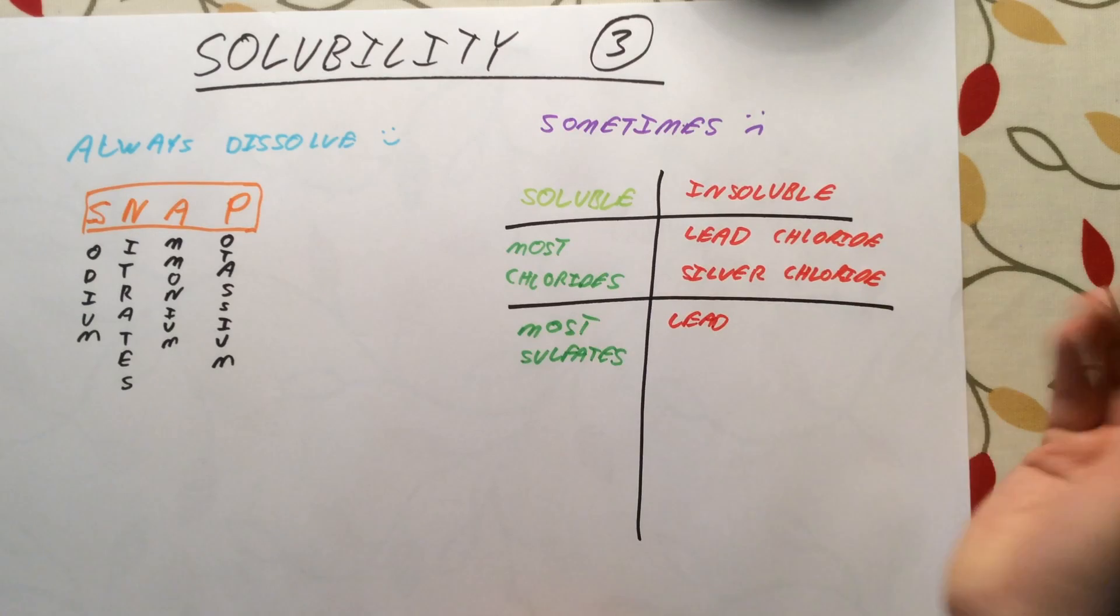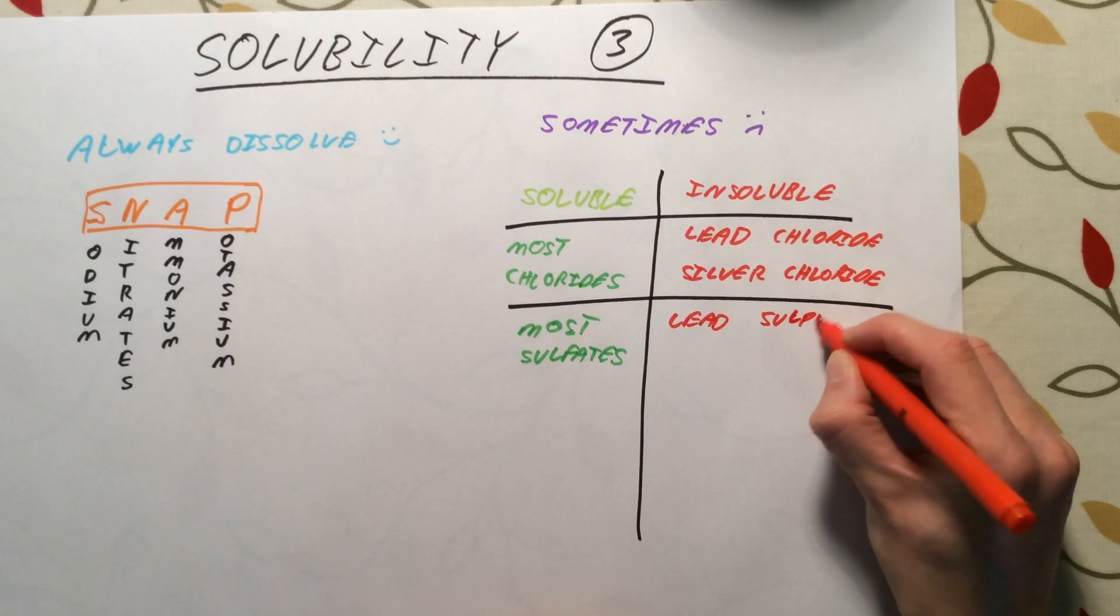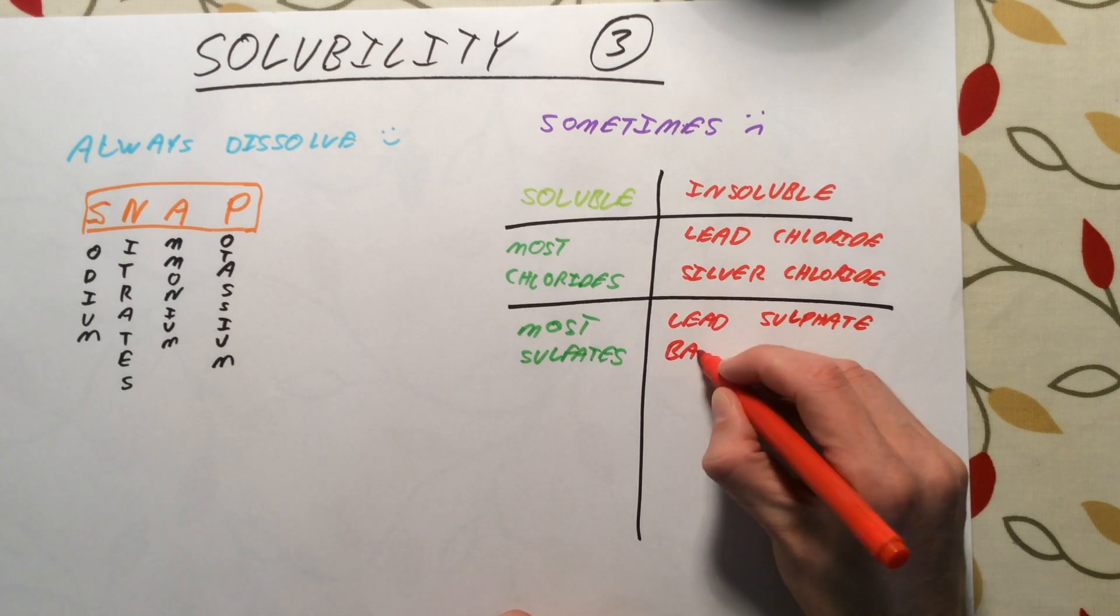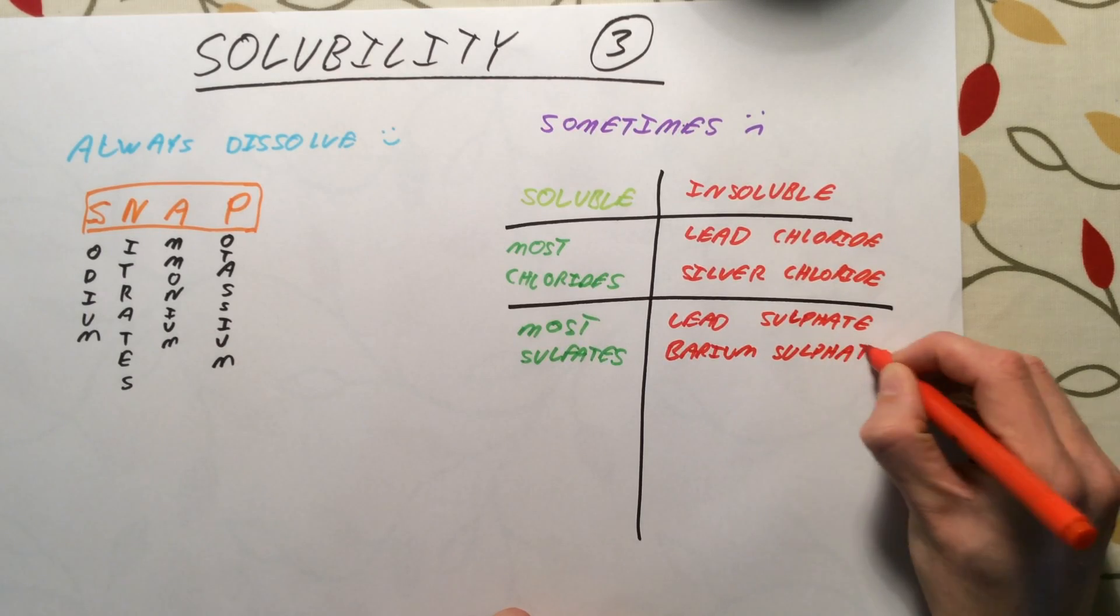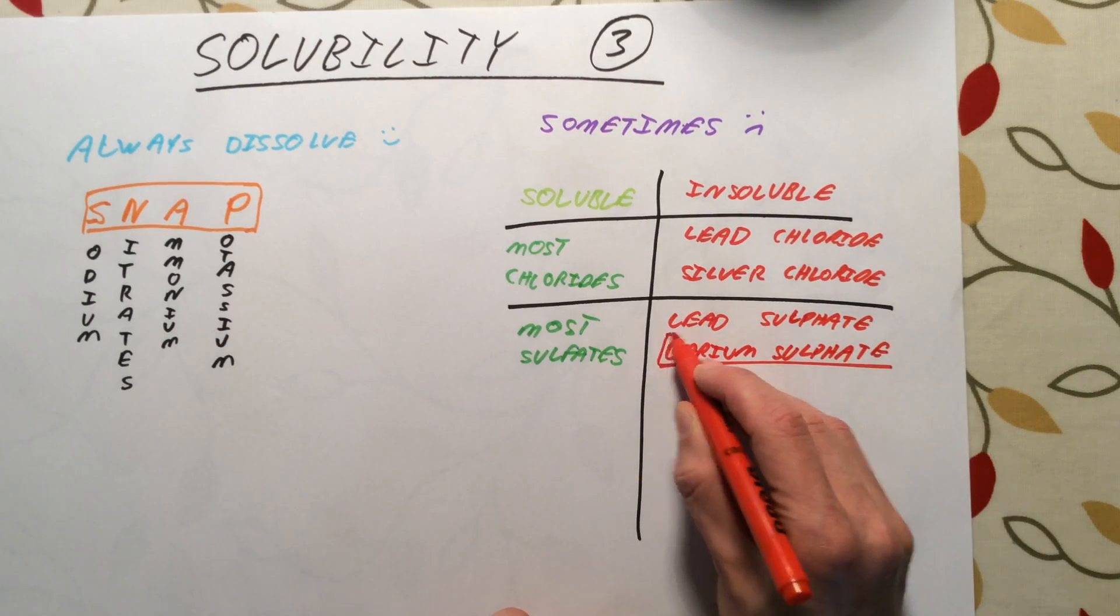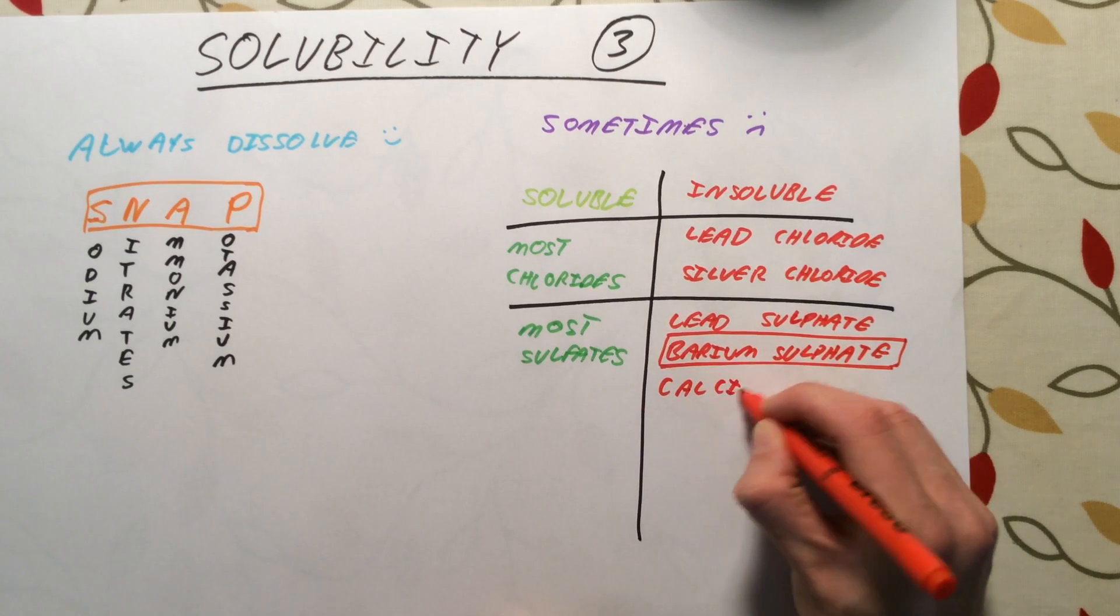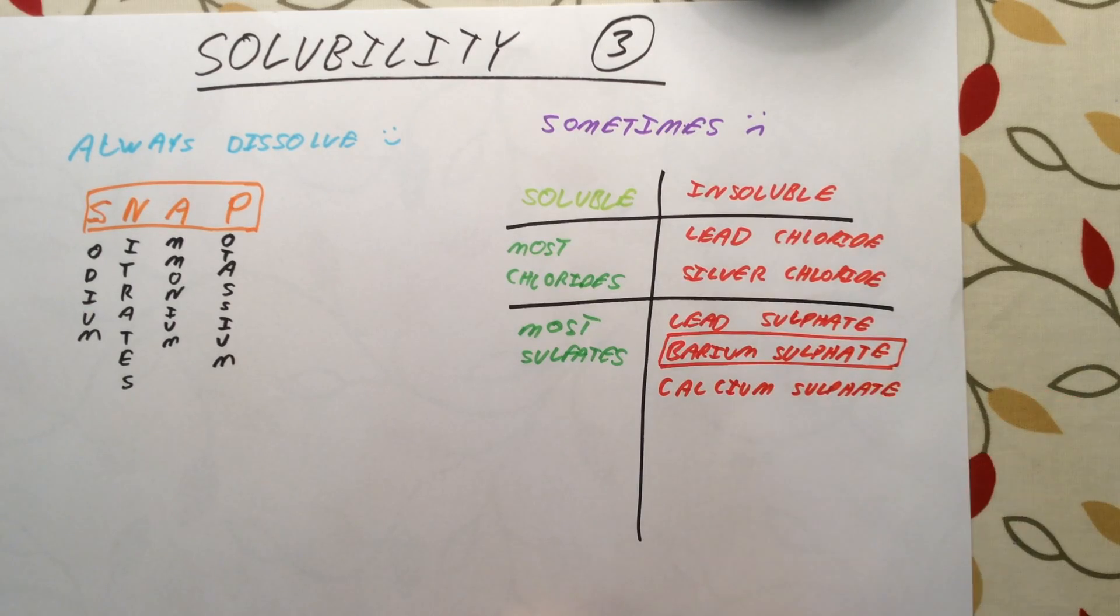I always remember, just because I've seen it a few times, that lead salts tend not to dissolve. However, here there are a couple of other examples as well. Barium sulfate is insoluble, it does not dissolve. This is actually a really important one which we're going to talk about at the end of this video. So I'm just going to draw a square on that. The last one you notice about, calcium sulfate does not dissolve in water. So in that case there's three exceptions to the rule.